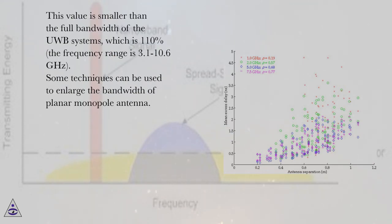This value is smaller than the full bandwidth of the UWB systems, which is 110 percent; the frequency range is 3.1 to 10.6 gigahertz. Some techniques can be used to enlarge the bandwidth of planar monopole antenna.